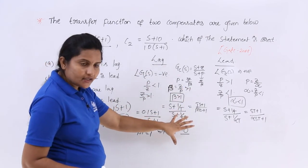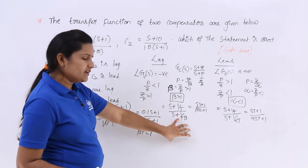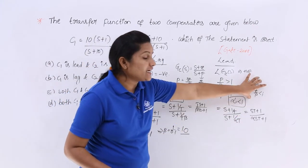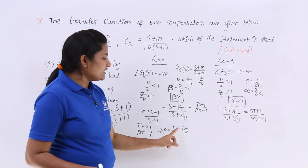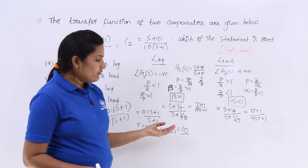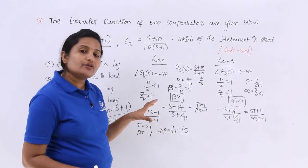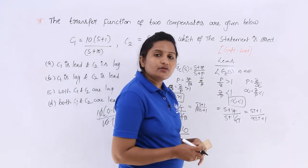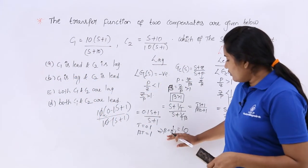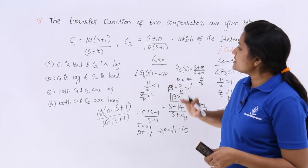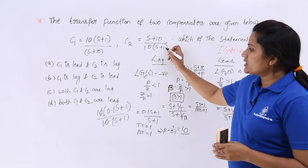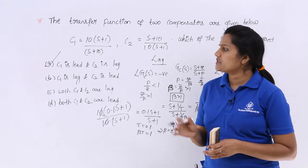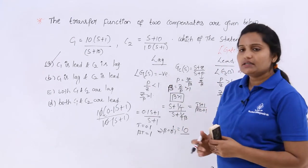To summarize the analysis: when the multiplication factor is greater than 1, it is beta and the compensator is lag. When it is less than 1, it is alpha and the compensator is lead. So C2 is lag and C1 is lead — option A is correct. This was a 2-mark GATE question from 2008.